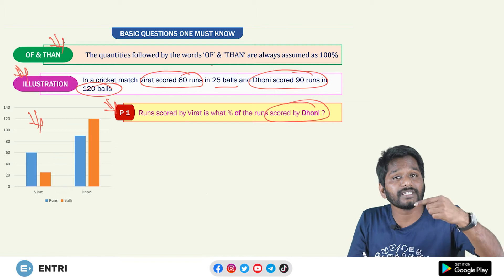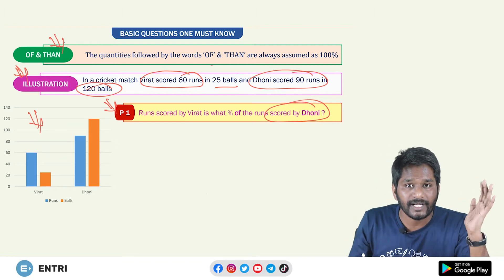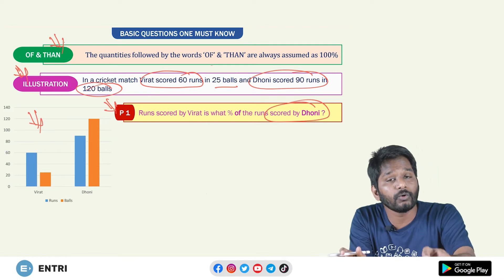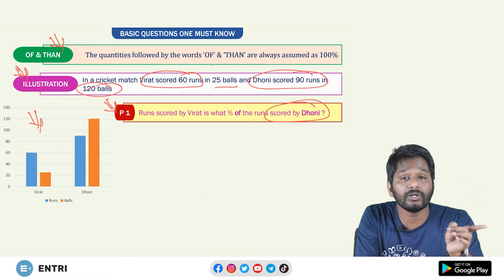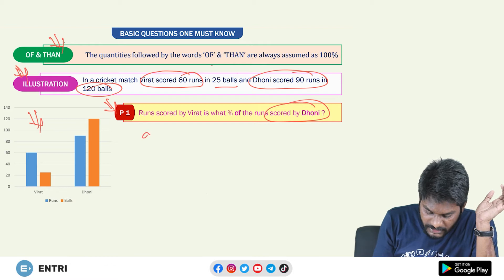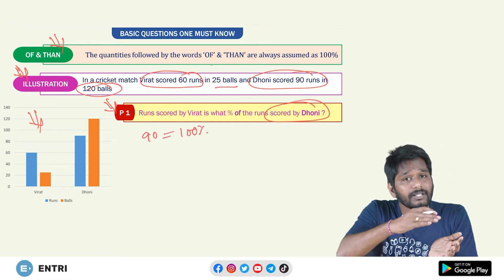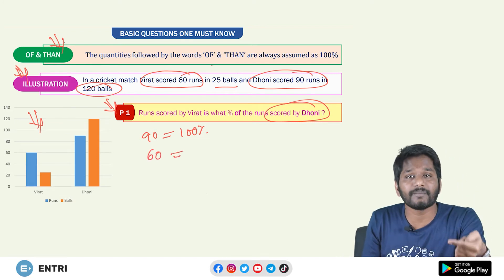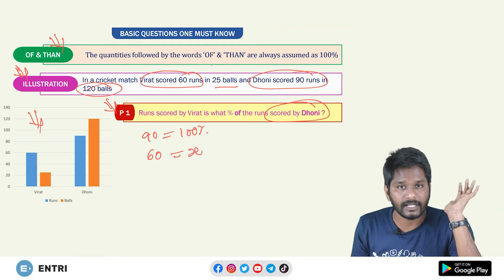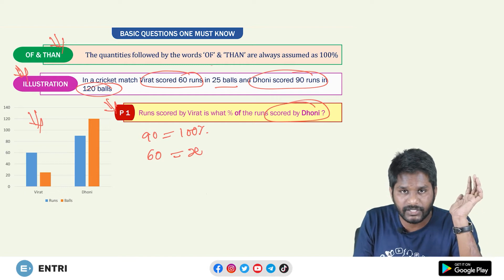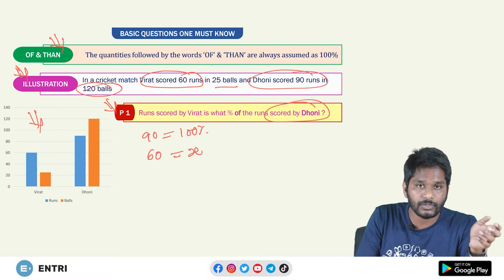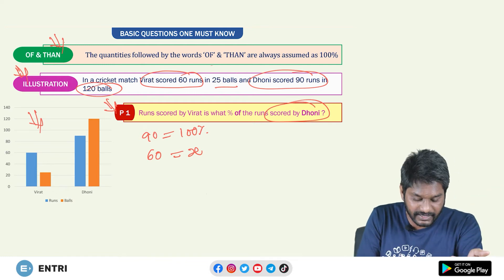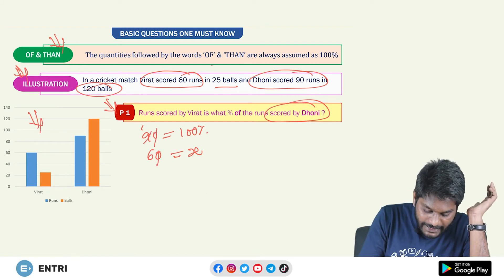If you have a score, it will be 100% of the score. Virat's score is 60 and Dhoni's score is 90. So 90 is equal to 100%. We set up the proportion: 90 is 100% and Virat's score of 60 is equal to what percent, which we call X. Since 90 and 60 are on the same side, we can cancel these two quantities directly.